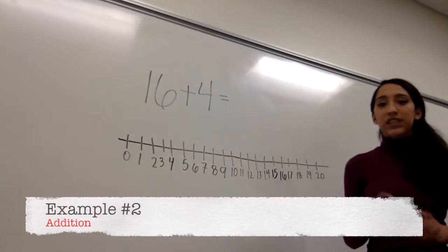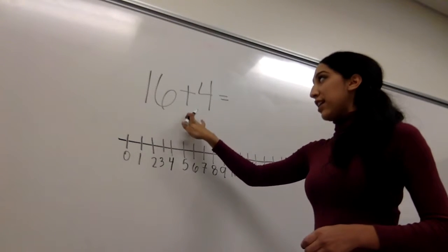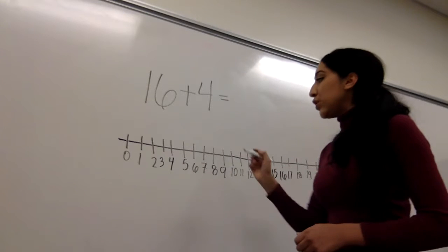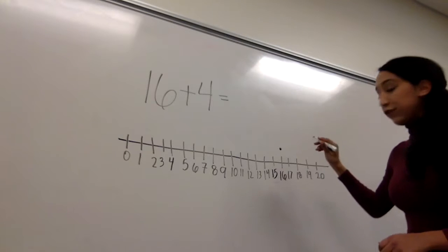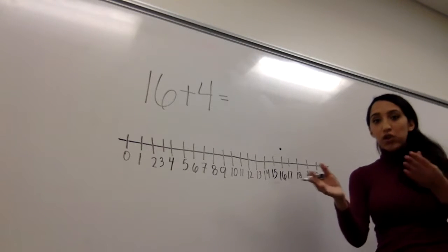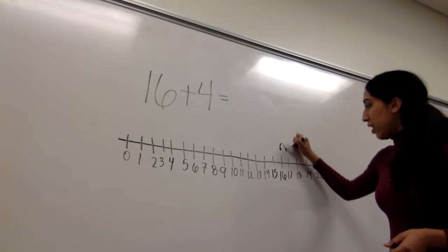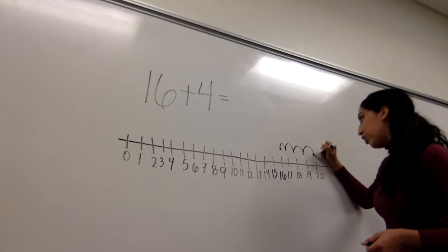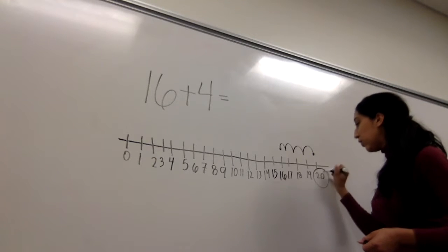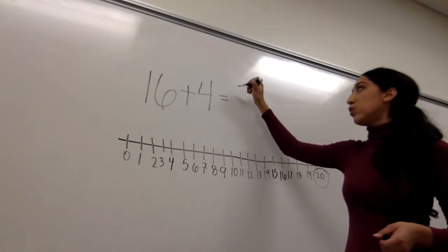Okay, so our second addition example will be 16 plus 4. So you draw a dot at 16. And of course, it's addition, so you go forward. So you will add 4 bunny hops. 1, 2, 3, 4. And you draw a dot at 20. You circle the 20. And 16 plus 4 equals 20.